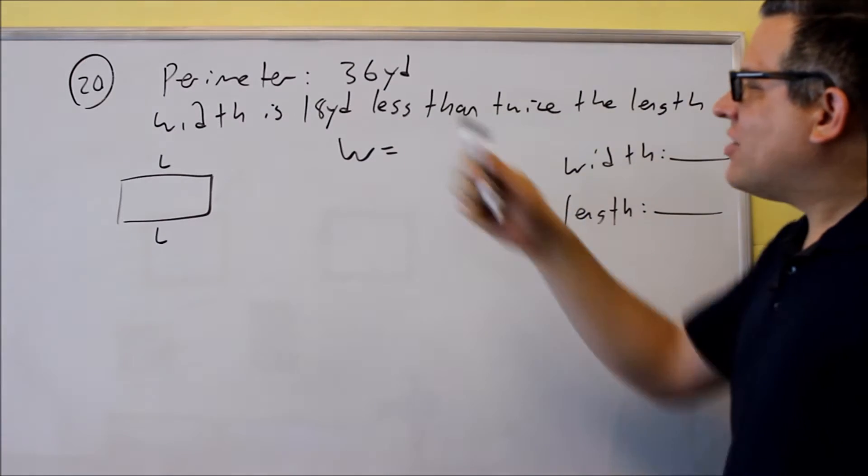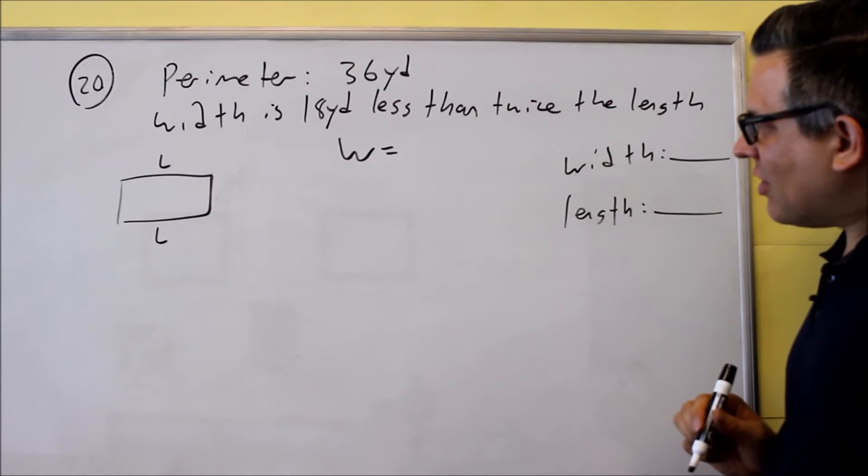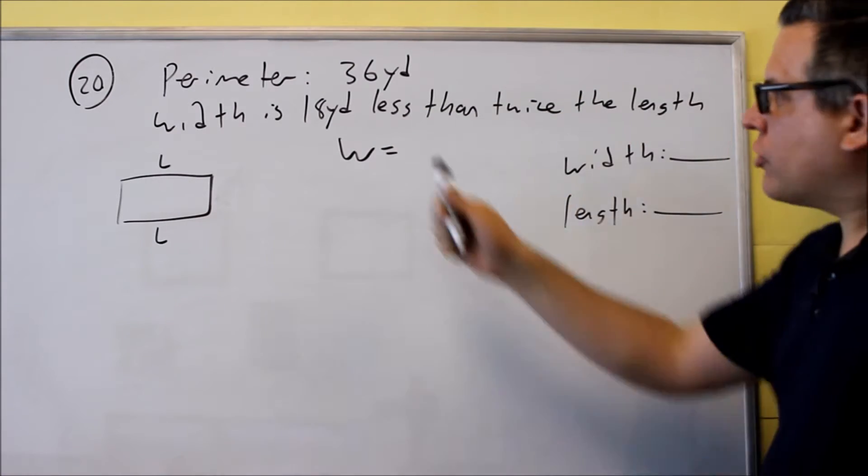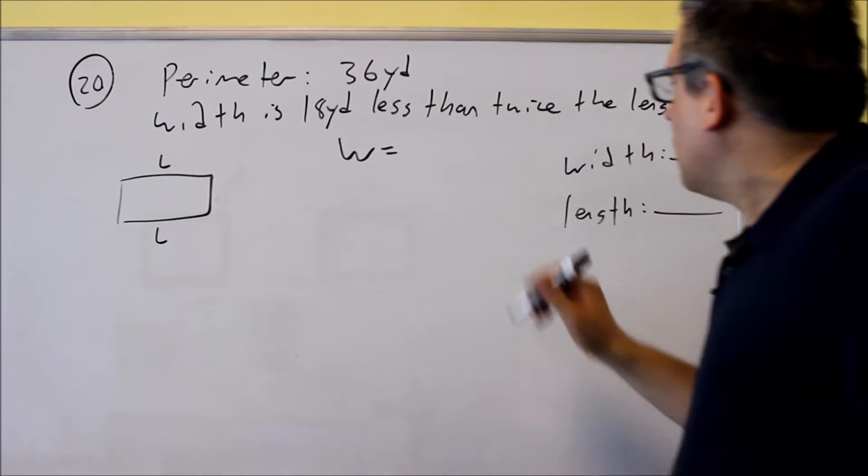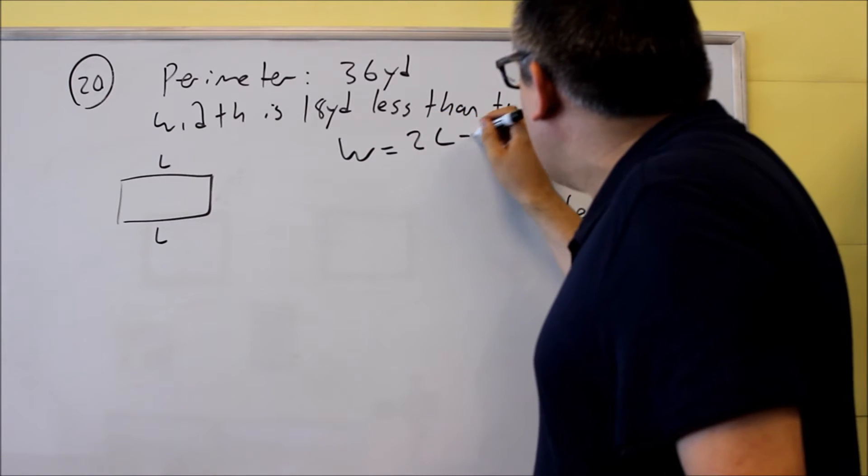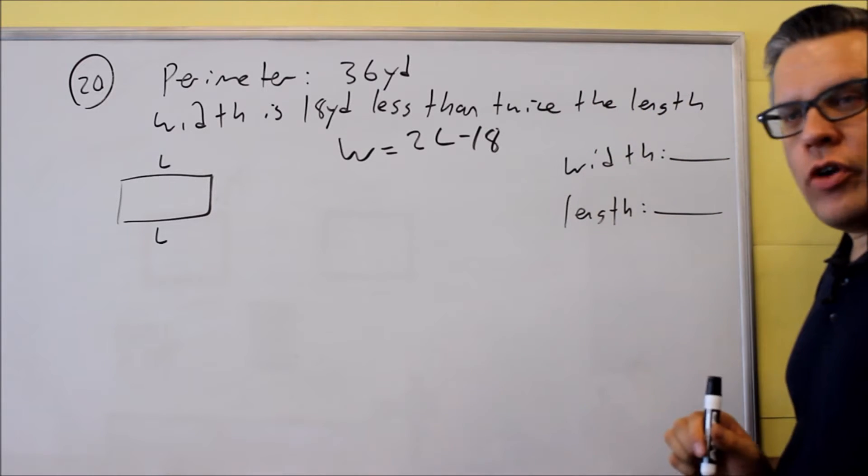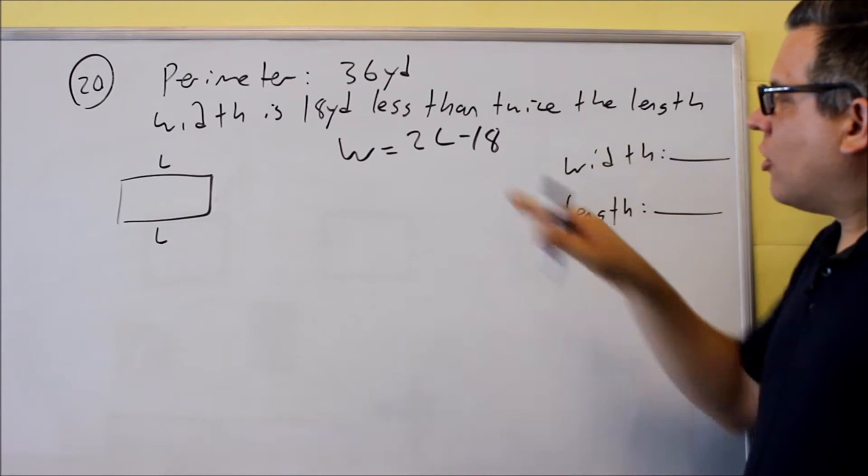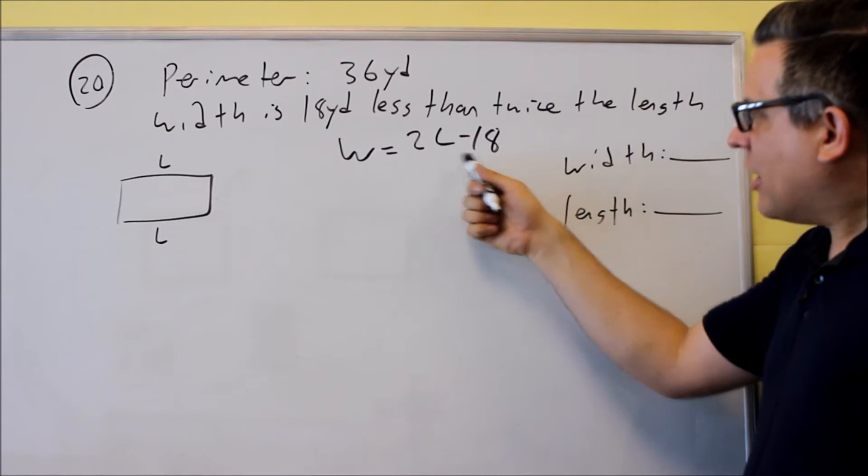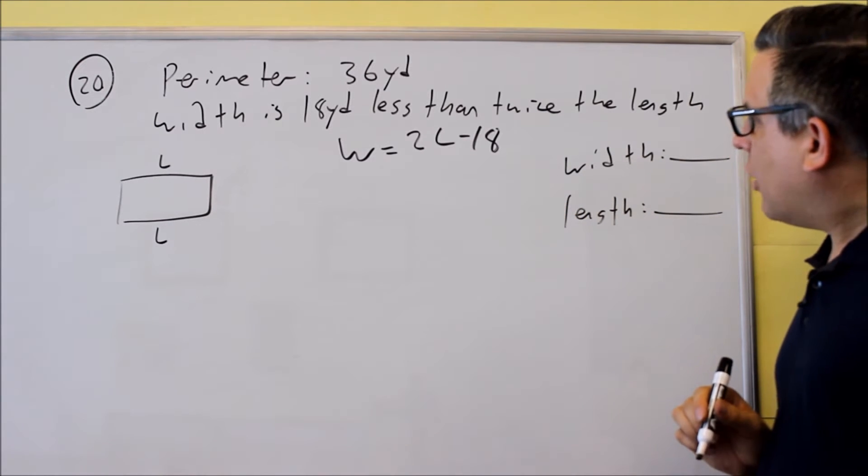Width is 18 yards less than twice the length. The word 'less than' means you've got to switch the order in the expression, so twice the length, and then 18 yards less than that. Our width is 2L minus 18, which is 18 less than twice the length.